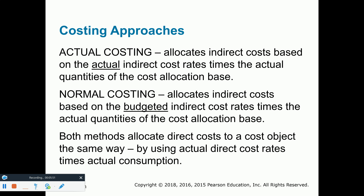When allocating indirect costs in job costing, we need to allocate based on either actual indirect costs or budgeted indirect costs. Most companies allocate based on the budget, then review at year end what they allocated versus the actual costs, and adjust for the difference. Sometimes we allocated too much — the budget was higher than actual — and sometimes we allocated too little because actual numbers came in higher than budget. We will adjust for that at the end of the year.